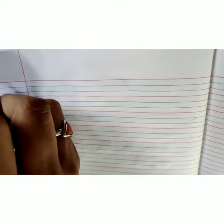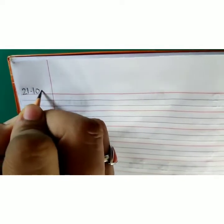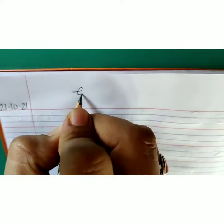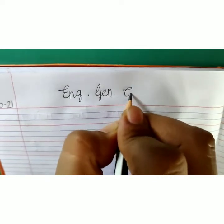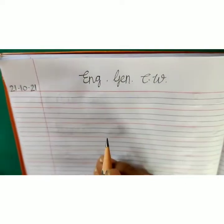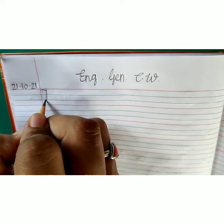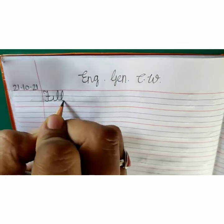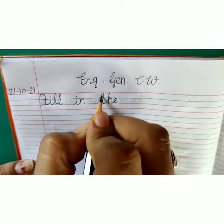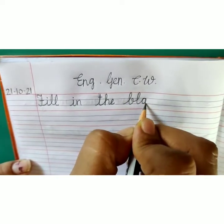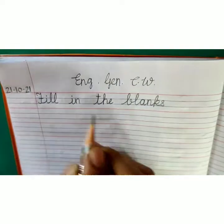Hello everyone. Today we will write fill in the blanks of English General. Open your notebook and write down today's date in the margin: 21-10-21, at the top. English General Classwork. Near the margin, write down heading: Fill in the blanks.